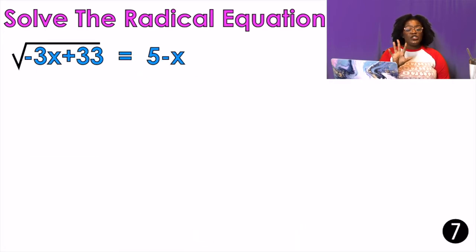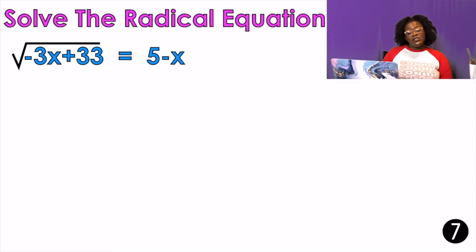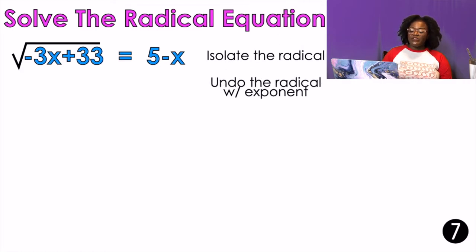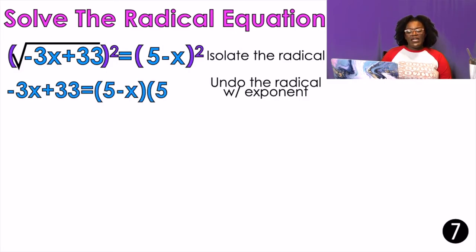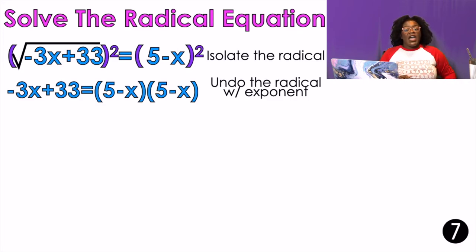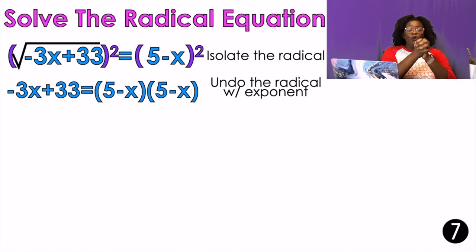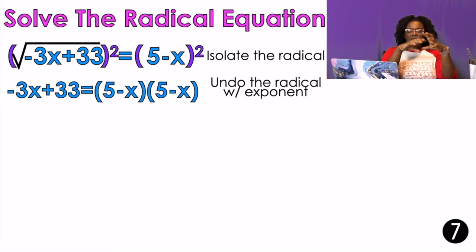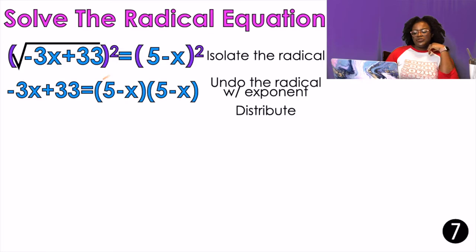The next two examples are a little bit tricky. My radical is already isolated, so I undo it with an exponent — it's a square root, so I square both sides. The problem is that on the right-hand side I can't just say 5 squared minus x squared and move on. I have to double distribute because of that minus in the middle. If it were just 5x with no minus, I could write 25x squared, but because of that minus I have to FOIL.